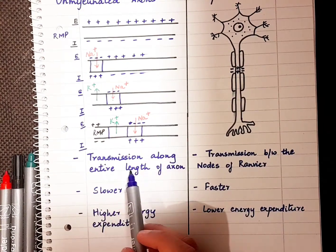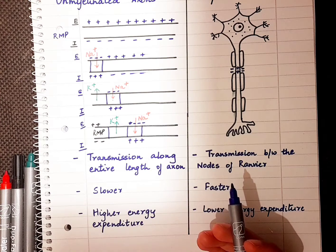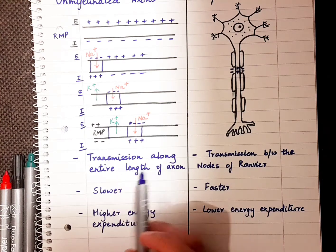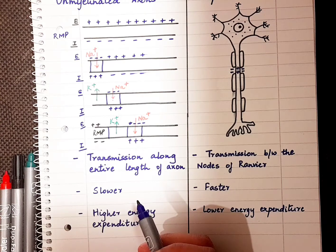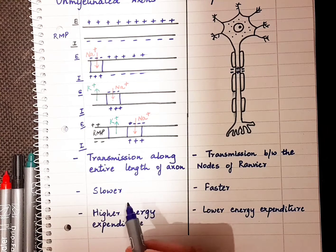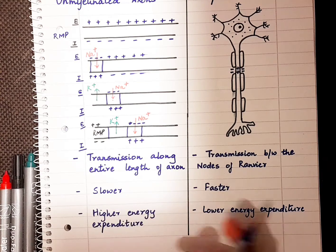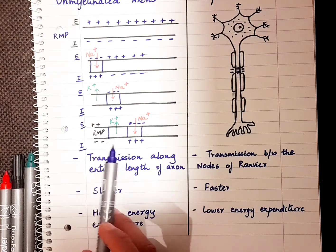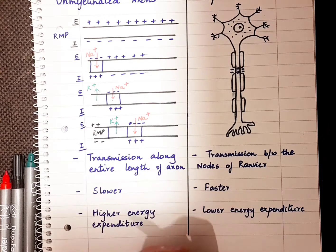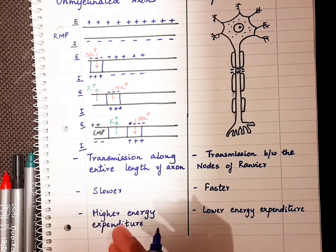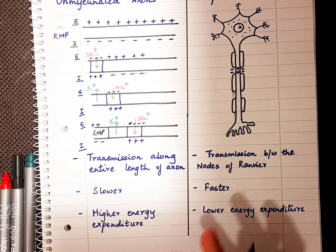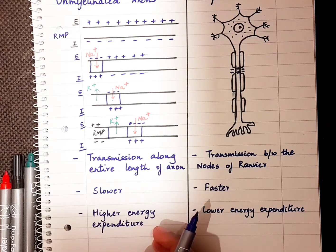Some characteristics of continuous conduction: transmission occurs along the entire length of the axon, so the whole axon helps in the conduction of action potential — that is why it's called continuous conduction. It is also a bit slower compared to saltatory conduction because more ion channels are involved and more channels have to open. There is also higher energy expenditure because the sodium-potassium pump has to maintain the resting membrane potential, spending more energy since more channels have to be converted back to the resting state.